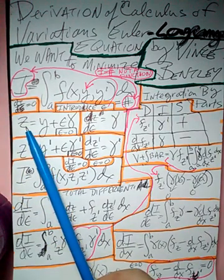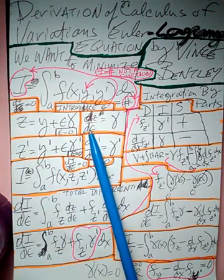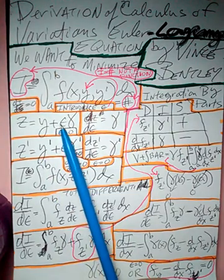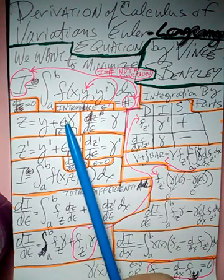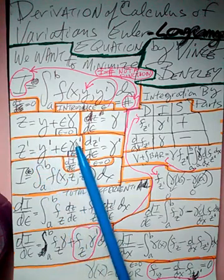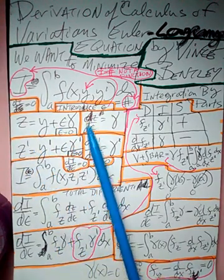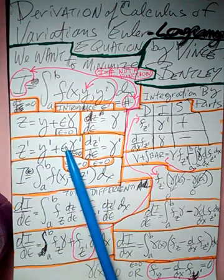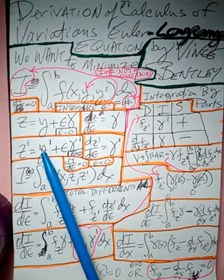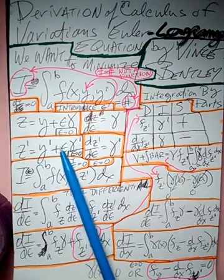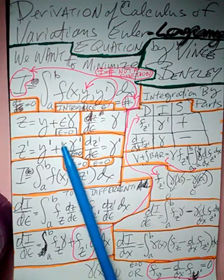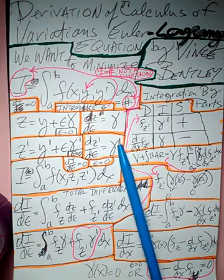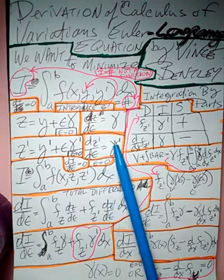Now we take the derivative of Z with respect to x. Since y is a function of x that gives y prime; epsilon is a constant with respect to x, so it stays as epsilon; and γ is a function of x giving γ prime. So Z prime = y prime + ε·γ prime. Taking the derivative of Z prime with respect to epsilon: y prime has no epsilon (zero), and the derivative of ε·γ prime with respect to epsilon is γ prime. So dZ'/dε = γ prime.